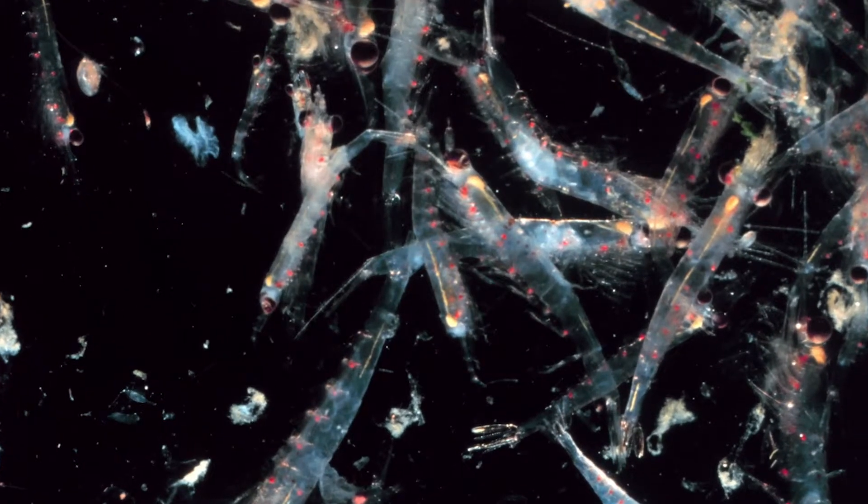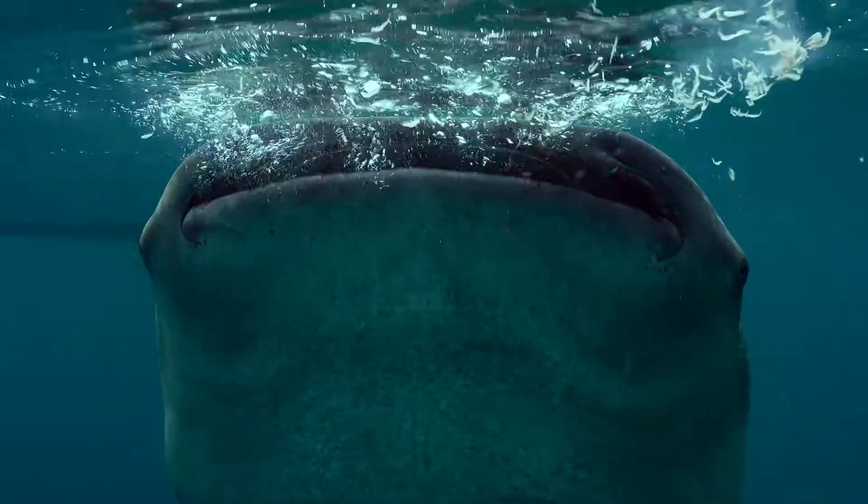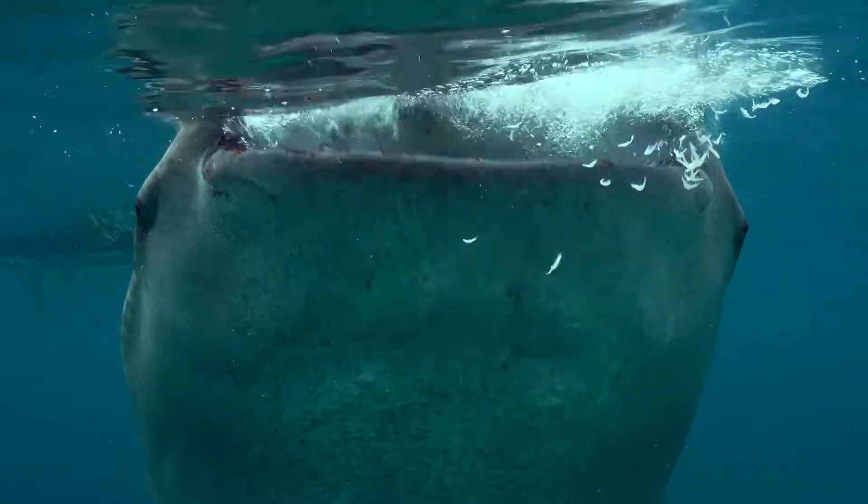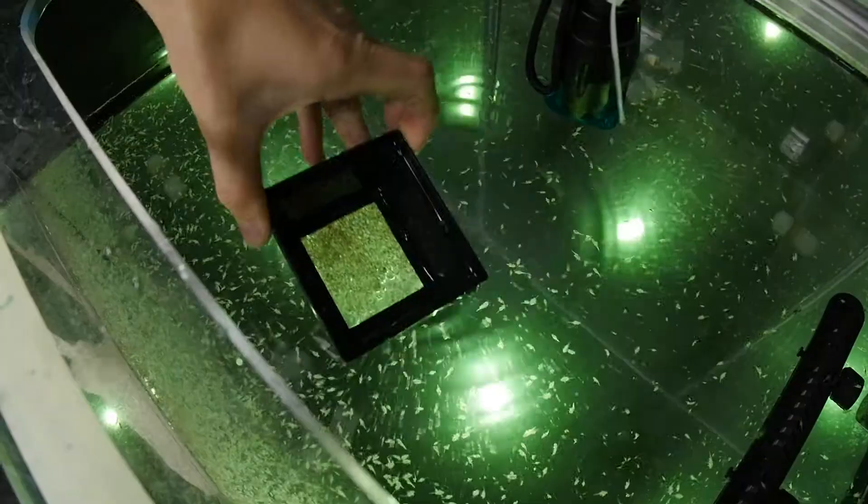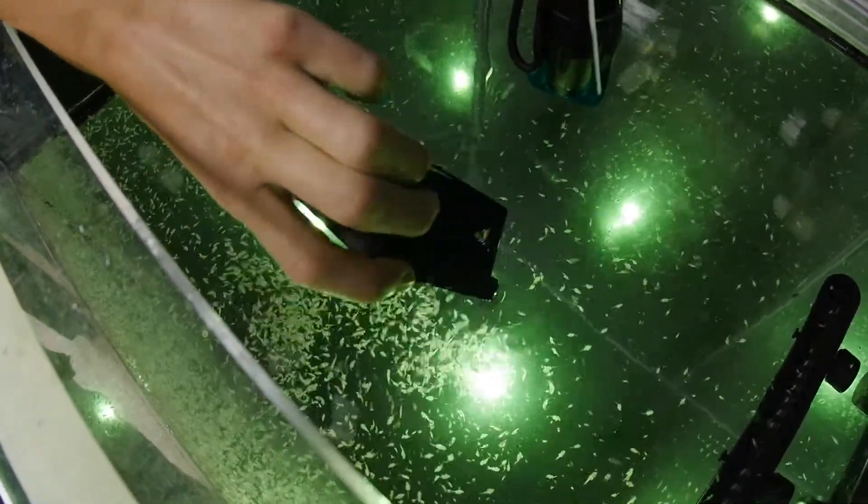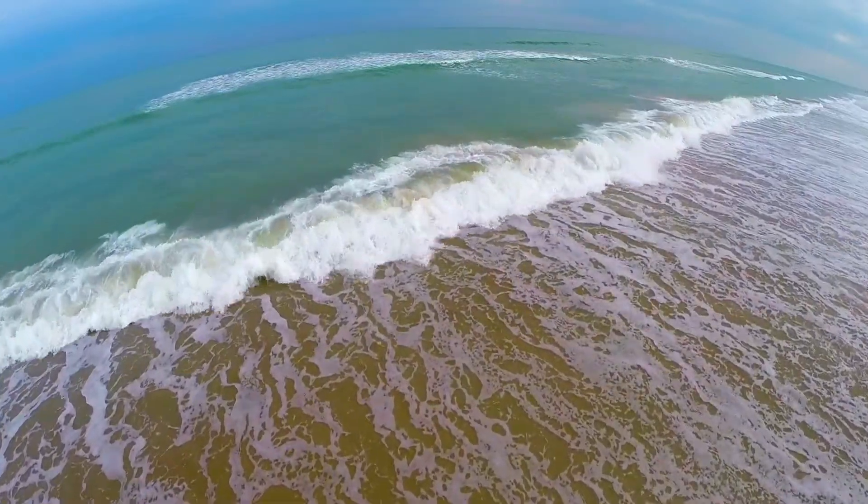Oceans are teeming with shrimp-like krill. They're the base of the marine food chain. Every night, they migrate in giant swarms to the surface to feed. Now, these lab experiments are showing all that kicking really does add up.